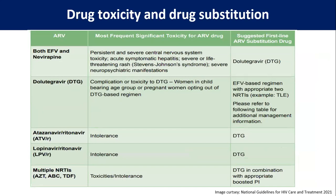For both efavirenz and nevirapine, in cases of persistent and severe CNS toxicity, symptomatic hepatitis, severe or life-threatening rash like SJS, or severe neuropsychiatric manifestation, replace efavirenz or nevirapine with dolutegravir. If dolutegravir produces complications in a pregnant woman, replace it with an efavirenz-based regimen with appropriate 2-NRTI combination and refer the patient. For atazanavir/ritonavir intolerance, we can go for DTG. Similarly for lopinavir/ritonavir, we can replace it with DTG. For multiple NRTI toxicities — zidovudine, abacavir, TDF toxicities — we can go for DTG in combination with an appropriate boosted PI.